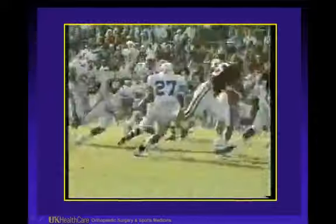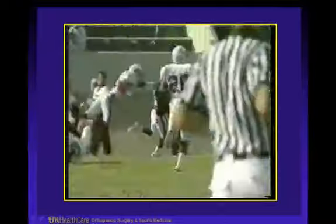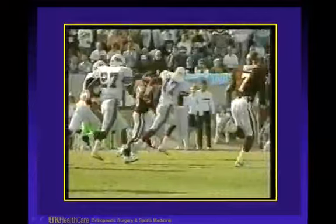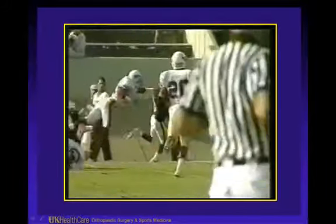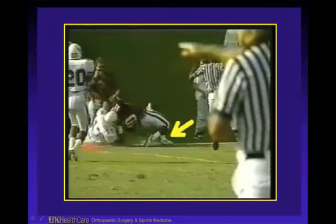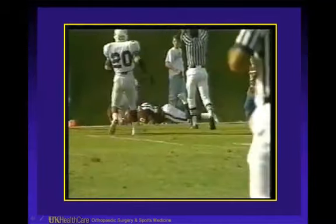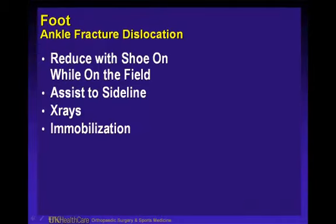Another example of a fracture dislocation of the ankle — a running back gets tripped up and his ankle is externally rotated, pulled down from behind near the end zone. He has a fracture dislocation of his ankle. Suggestions with fracture dislocations of the ankle: reduce it with gentle axial traction with the shoe on while on the field. Have a plan to get the injured player off the field — whether with other players, a rolling gurney, or a seated device. Then x-ray and immobilize.